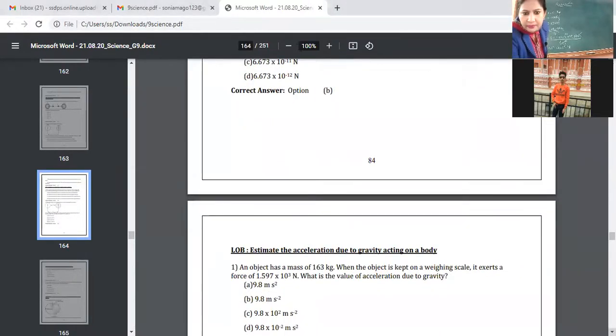Next question. An object has a mass of 163 kg. When the object is kept on a weighing scale, it exerts a force of 1.597 into 10 raised to power 3 Newton. What is the value of acceleration due to gravity? So let's note down the data first. What is given to us?